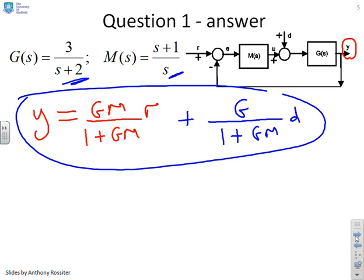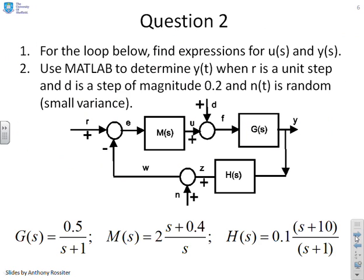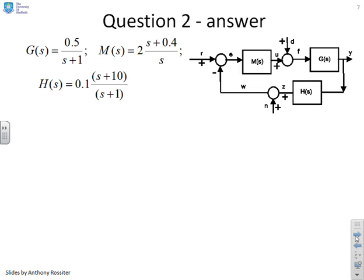Second question: for the loop below, find expressions for U(s) and Y(s). You'll notice U is here and Y is here, and with this question there are three loop inputs: d, n, and r. The second part says use MATLAB to determine y(t) when r is a unit step, d is a step of magnitude 0.2, and n(t) is a random signal with a small variance. We'll do the MATLAB at the end; for now we'll focus on part one.